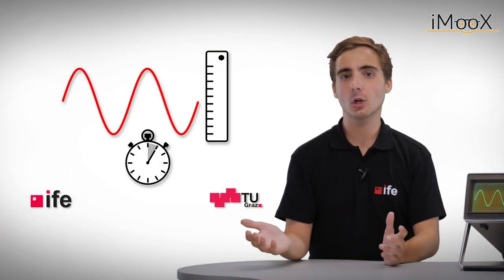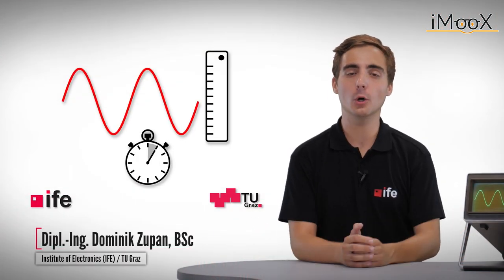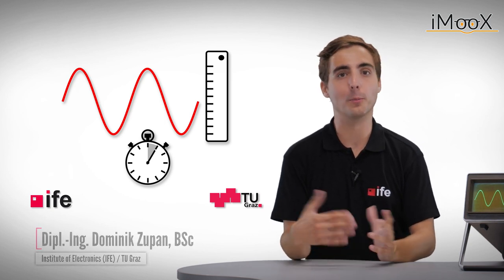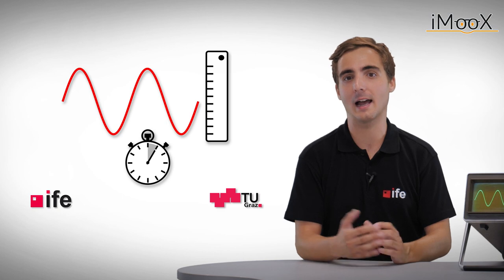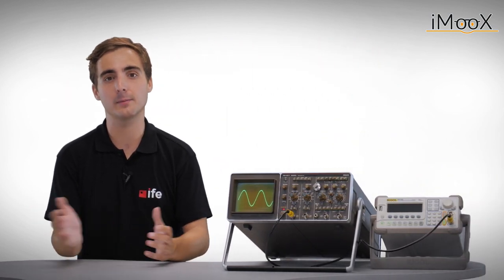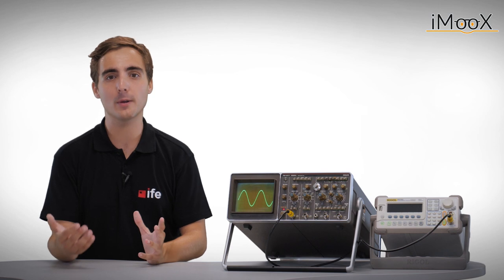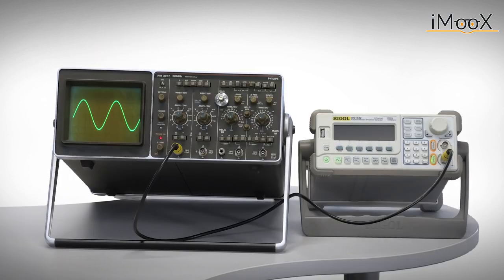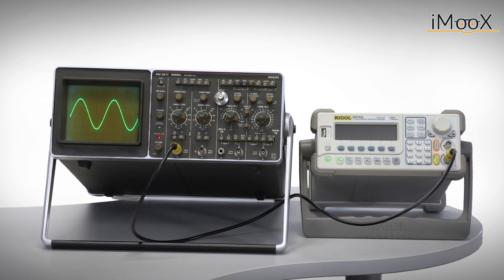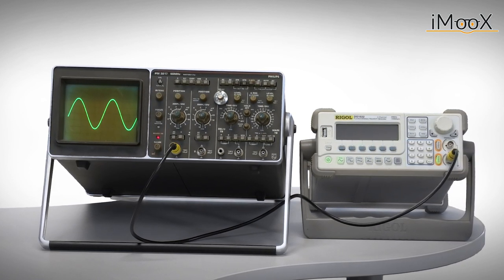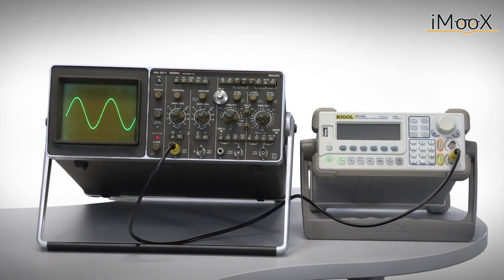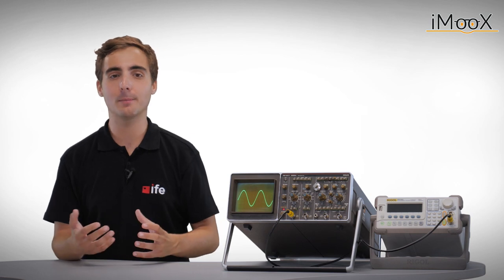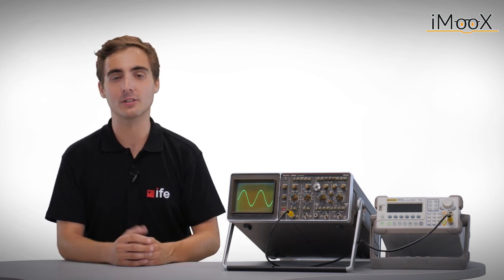Welcome again. Oscilloscopes, or simply referred to as scopes, are electronic instruments that can be used for observing and capturing time-varying voltage signals. Because of their flexibility, they play a very important role in electronic engineering laboratories. However, especially for unexperienced users and beginners, the broad range of functions that some scopes offer might be very confusing. Therefore, let us talk about the very basics of oscilloscopes.